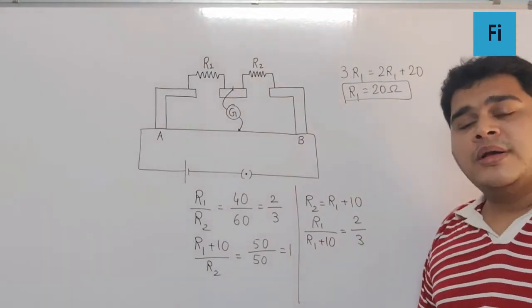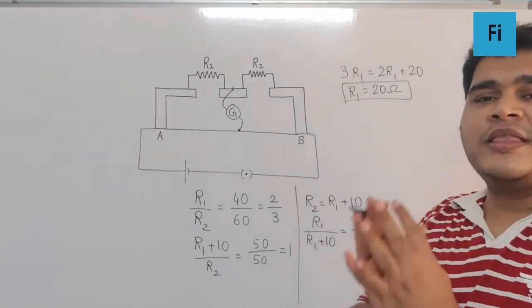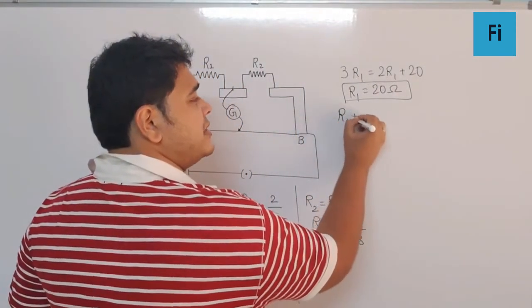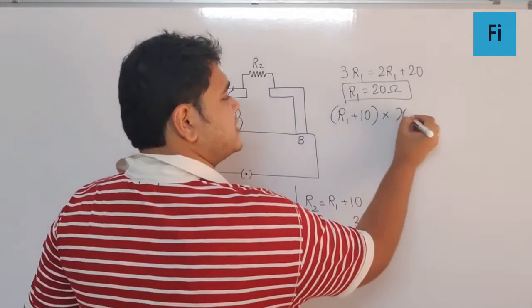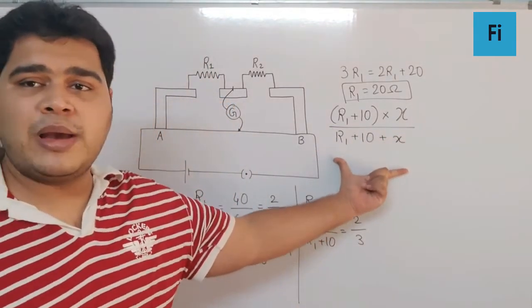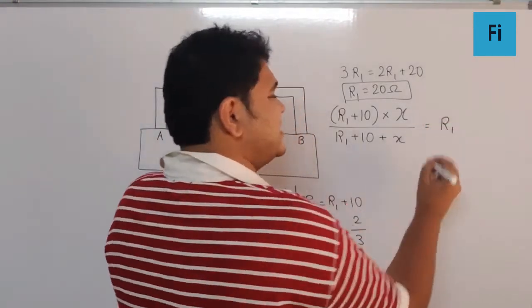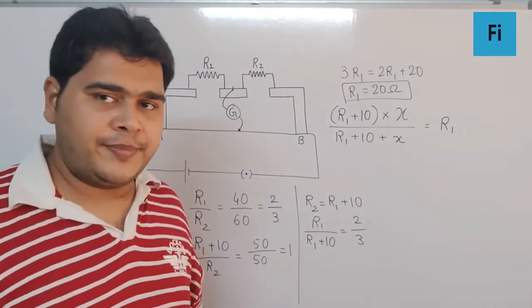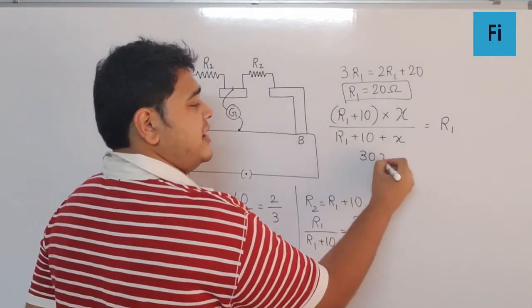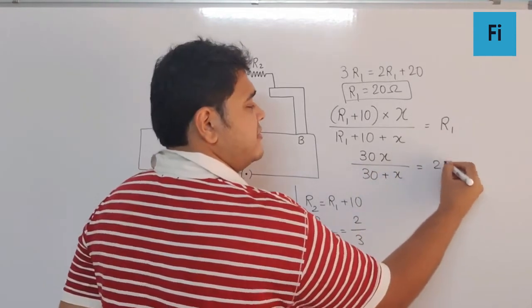Now we want R1 plus 10 to be connected in parallel with some unknown, say x, to get the value of R1 again. This means R1 plus 10 into x upon R1 plus 10 plus x, the parallel equivalent, should equal R1 itself. We already know R1 is 20, so 30 into x upon 30 plus x should equal 20.